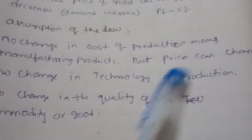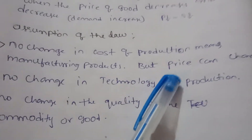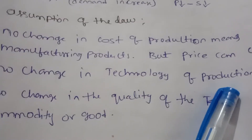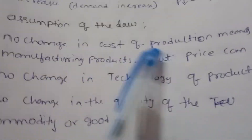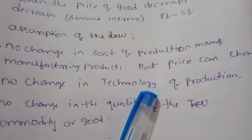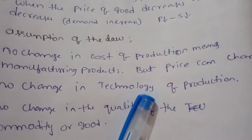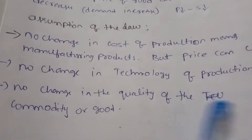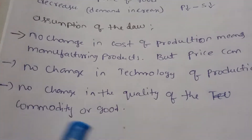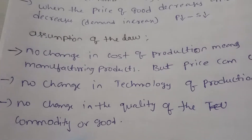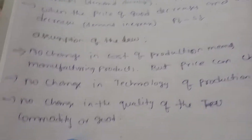The next assumption is no change in technology. Production technology changes because the quality of the commodity can be affected.